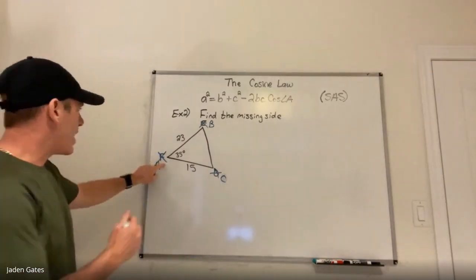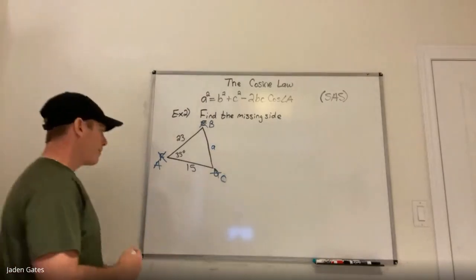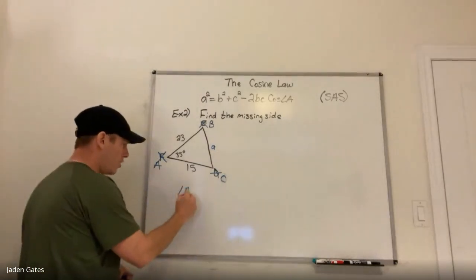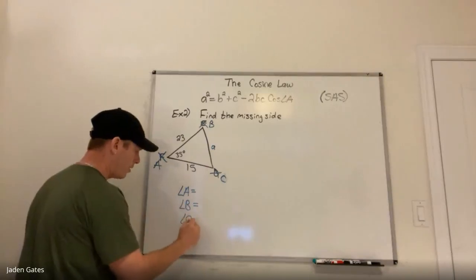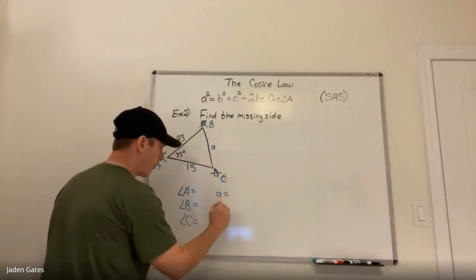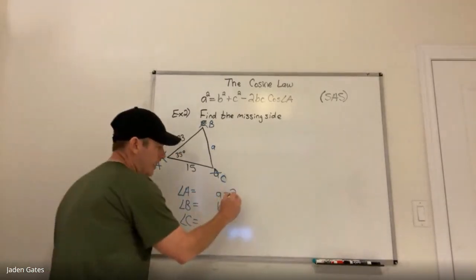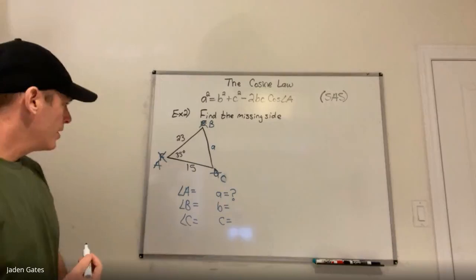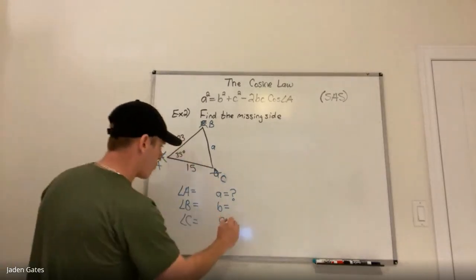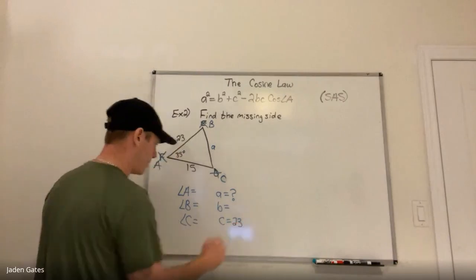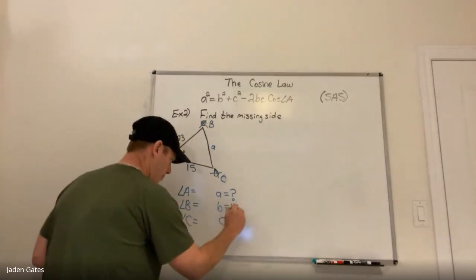With my newly labeled triangle, I'll write down my givens. Side A is what I'm trying to find. My new label means 23 is across from angle C, so that's side c, which makes 15 side b because it's across from angle B. And the angle I have is 35 degrees.